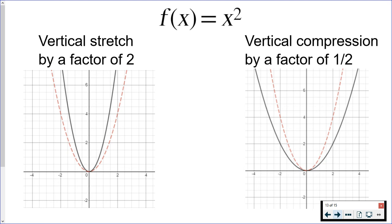Here are the graphs of both equations. The red is the original parent function f of x equals x squared. The black parabolas are the stretches and compressions. On the left, the vertical stretch looks like someone stretched the screen from the top and bottom, making the function narrower. On the right, the vertical compression looks like someone pushed from the top and bottom, scrunching the graph so it actually gets wider because it has nowhere to go but to the sides.